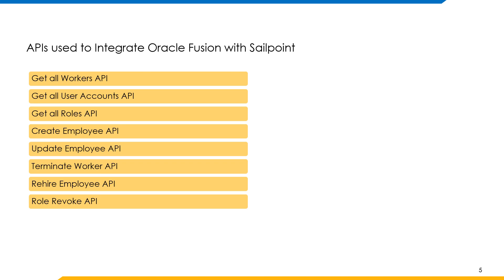CreateEmployee API is used to create an employee record in Oracle Fusion application. UpdateEmployee API is used to update an employee record in Oracle Fusion application. TerminateWorker API is used to disable a worker record in Oracle Fusion. RoleRevoke API is used to revoke an assigned role. RehireEmployee API is used to enable an employee record in Oracle Fusion.